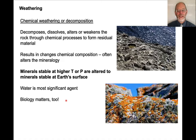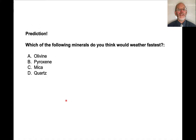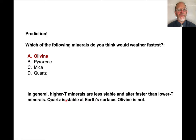Quick question: which of the following minerals do you think would weather fastest at Earth's surface? The answer is olivine. Higher temperature, higher pressure minerals tend to be less stable and alter faster than lower temperature minerals. Quartz is stable at Earth's surface, so it's not very susceptible to weathering. Olivine is the highest temperature mineral among this group, and so it would tend to weather the fastest.